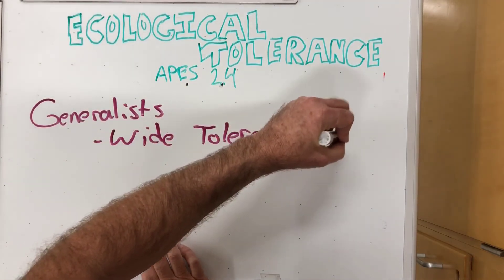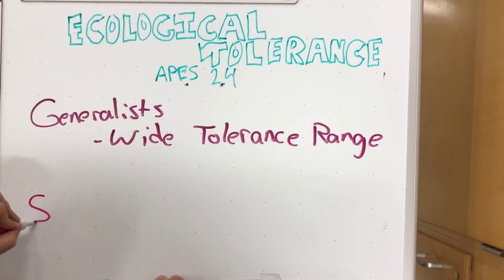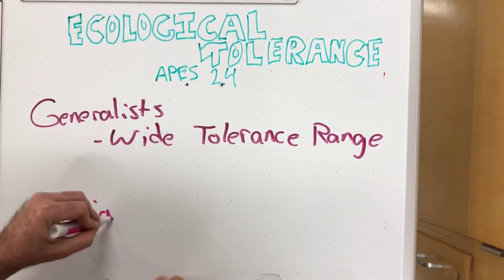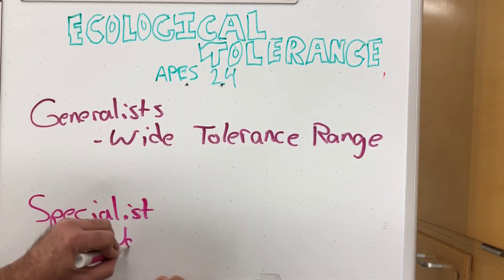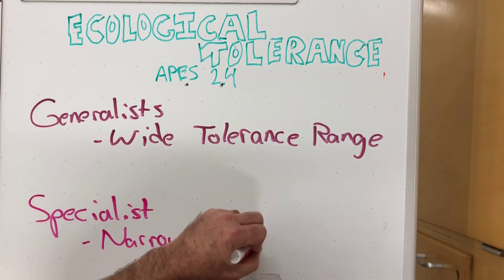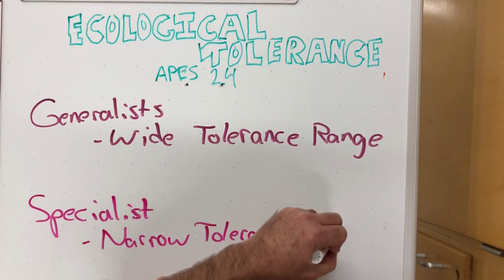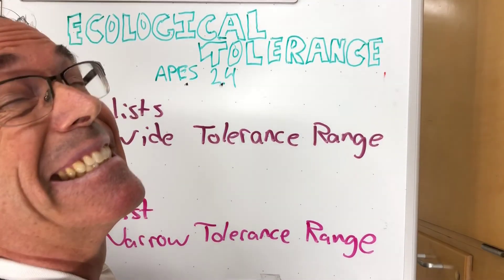In summary, generalists have a wide tolerance range and are very adaptable to new conditions. Specialists have a narrow tolerance range, and it's harder for them to adapt. I hope that helped.